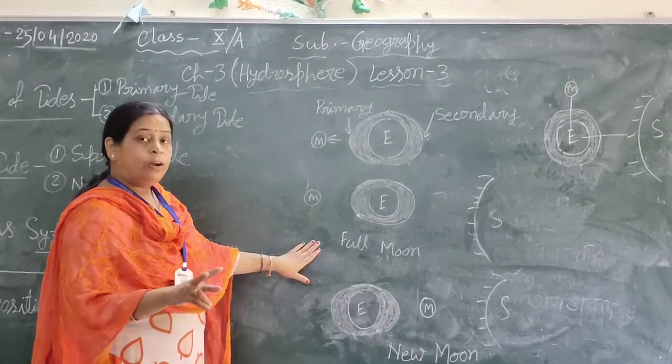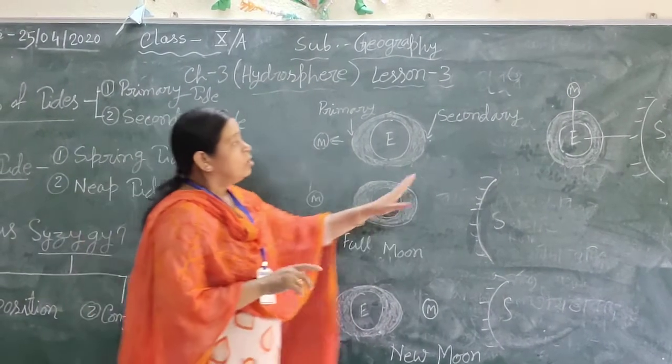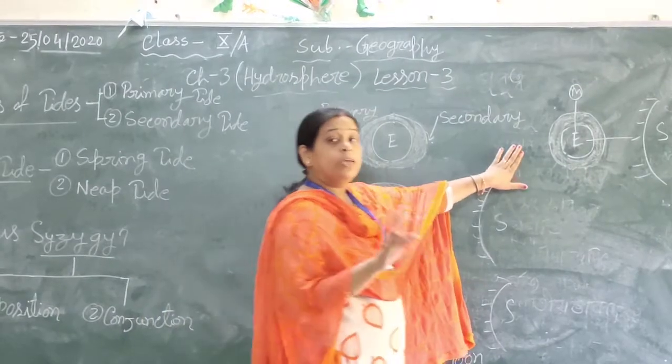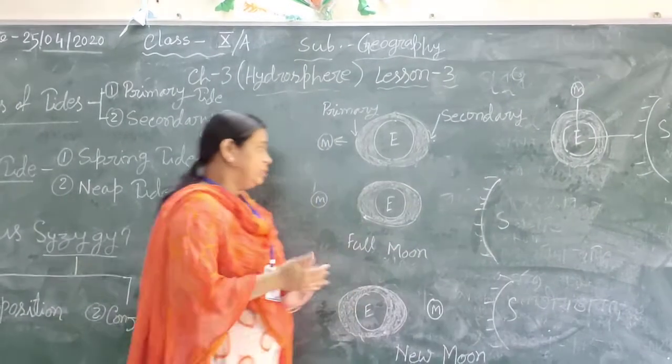So spring tide occurs twice in a month, and neap tide also occurs twice in a month.